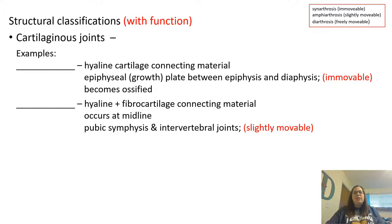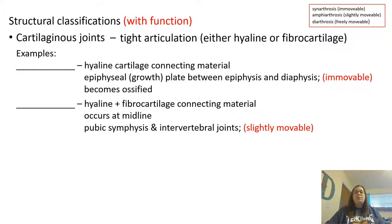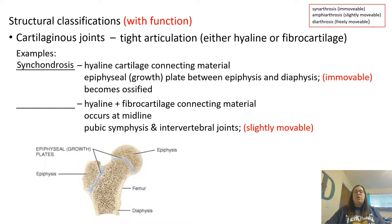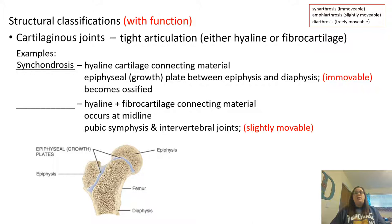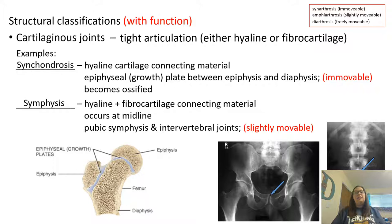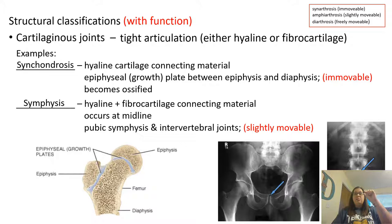Cartilaginous joints are tight articulations with cartilage present — either hyaline or fibrocartilage. Examples include a synchondrosis, which is hyaline cartilage connecting the epiphyseal growth plates between the epiphysis and diaphysis of the bones; these are immovable and eventually become ossified as growth plates close. Another example is a symphysis type of joint, using both hyaline and fibrocartilage, occurring at the midline of the body — examples include the pubic symphysis and the intervertebral joints, where the cartilage discs between each vertebra are slightly movable.